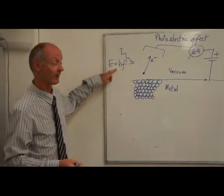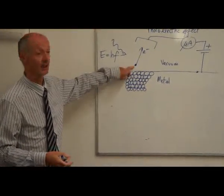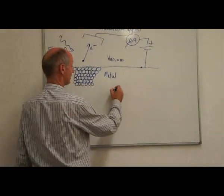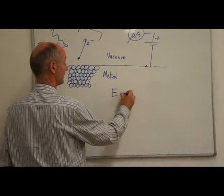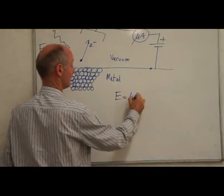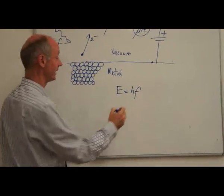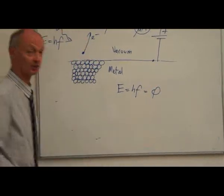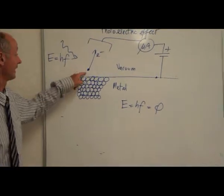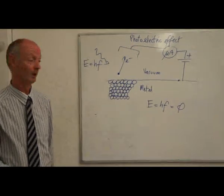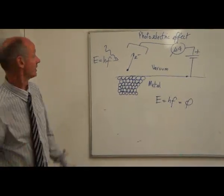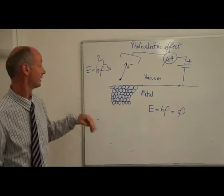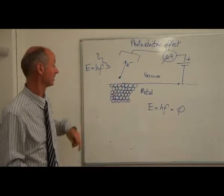As long as this energy is sufficient, electrons will be emitted. The minimum amount of energy is given by hf equal to something called the work function, phi, which is just enough to get the electrons to leave the surface. If we increase the energy of the photons, we get an increase in the kinetic energy of the electrons.